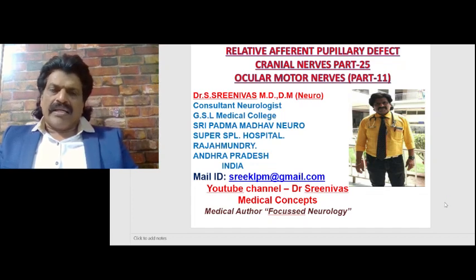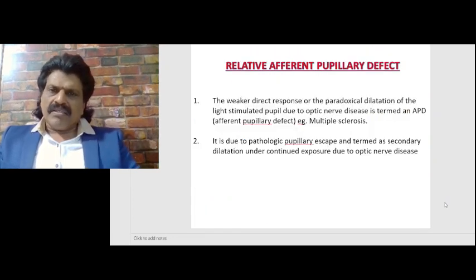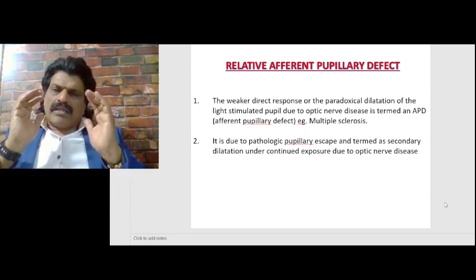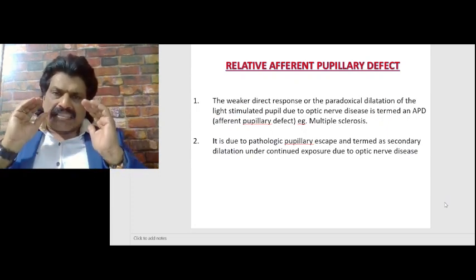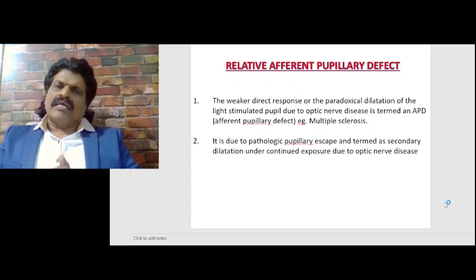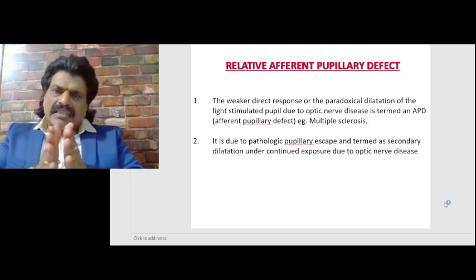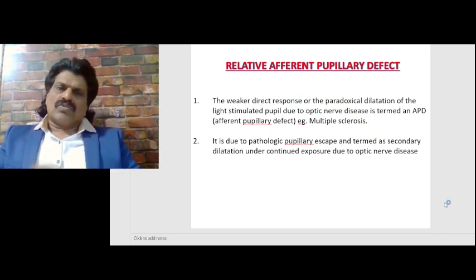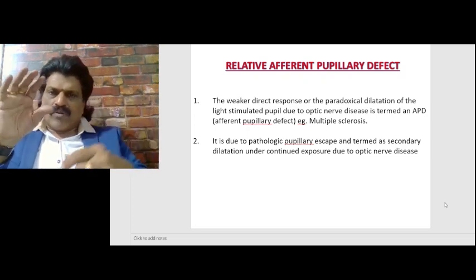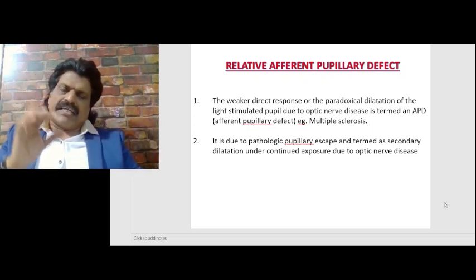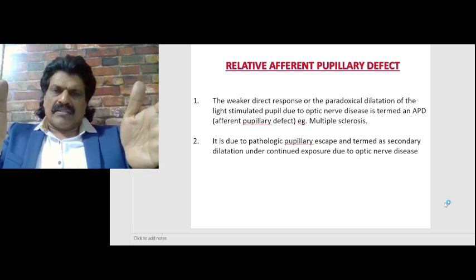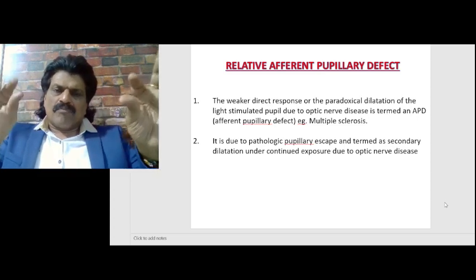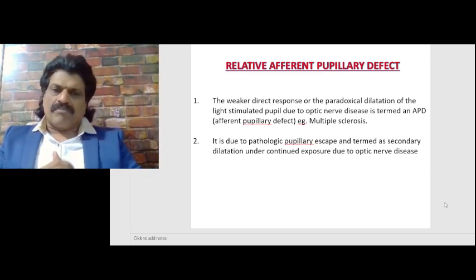So what exactly is RAPD or relative afferent pupillary defect? We all know that the pupillary light reflex has two pathways — afferent and efferent. The afferent is the second cranial nerve, the optic nerve; the efferent is the third cranial nerve. When we throw light, it goes via the afferent second cranial nerve to both Edinger-Westphal nuclei, stimulating the third cranial nerve for pupil constriction — that is the efferent pathway.